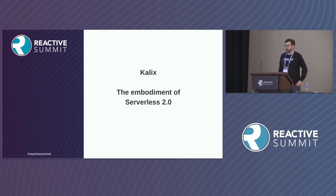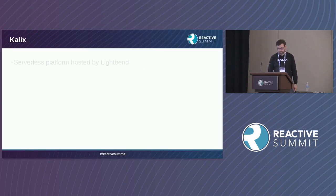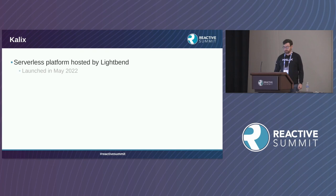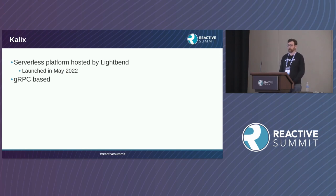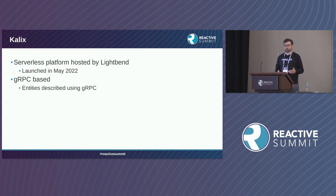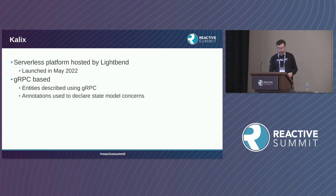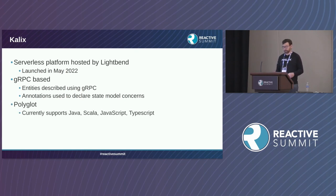This brings me back to Kalix. Kalix is the platform that Lightbend has built — the embodiment of serverless 2.0. It's hosted by Lightbend; we launched it in May of this year. We've actually been working on it since 2019, and it's gone through various incarnations in terms of names and distribution methods. It's gRPC-based — we describe entities using gRPC and declare how their state model works. And it's polyglot, currently supporting JavaScript and TypeScript, but it can support any language that supports gRPC.